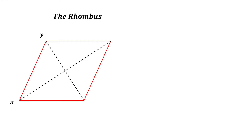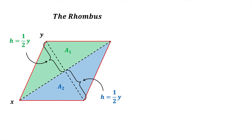We will now look at the rhombus with diagonal lengths x and y. We can divide the rhombus into two identical triangles whose areas are a1 and a2. The base of each triangle is x but the height of each triangle is one half of y. The area of the rhombus is the sum of a1 and a2. Since both these areas are triangles, the area of the rhombus equals half base times height of the green triangle plus half base times height of the blue triangle.